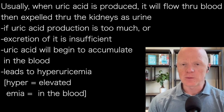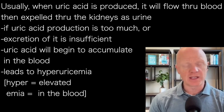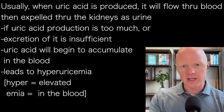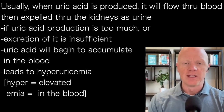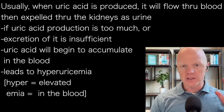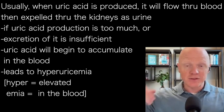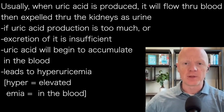Usually, when uric acid is produced, it will be flowing through the blood in the plasma, and then it will simply be expelled in the urine. The kidneys very actively will grab that uric acid and move it into what will become the urine. And if either the production of uric acid is too much or the excretion is insufficient, we'll start to have uric acid accumulate in the blood.